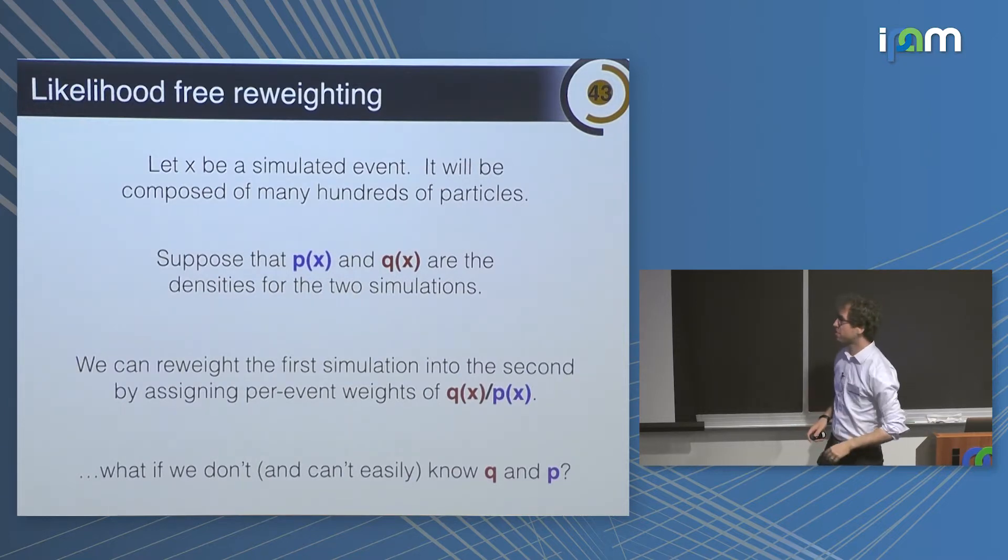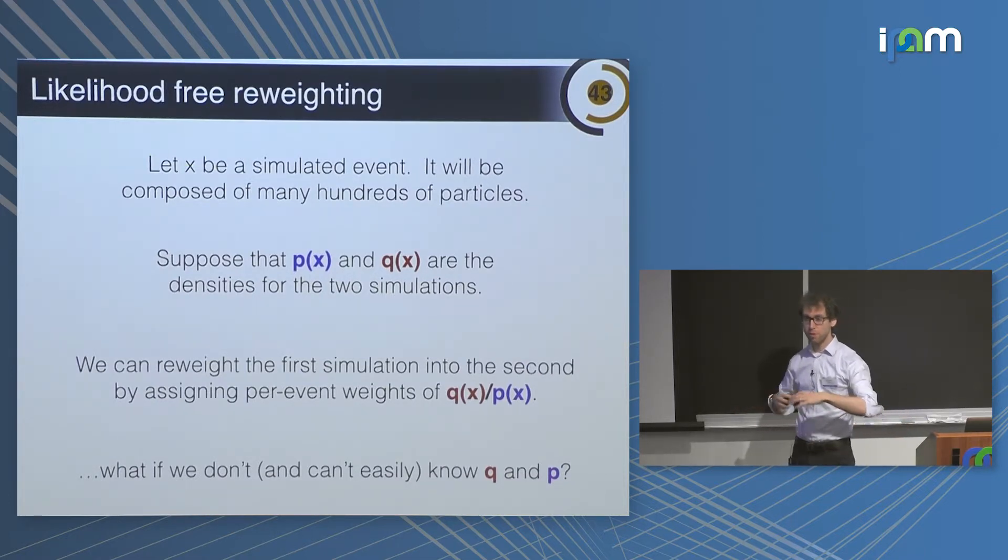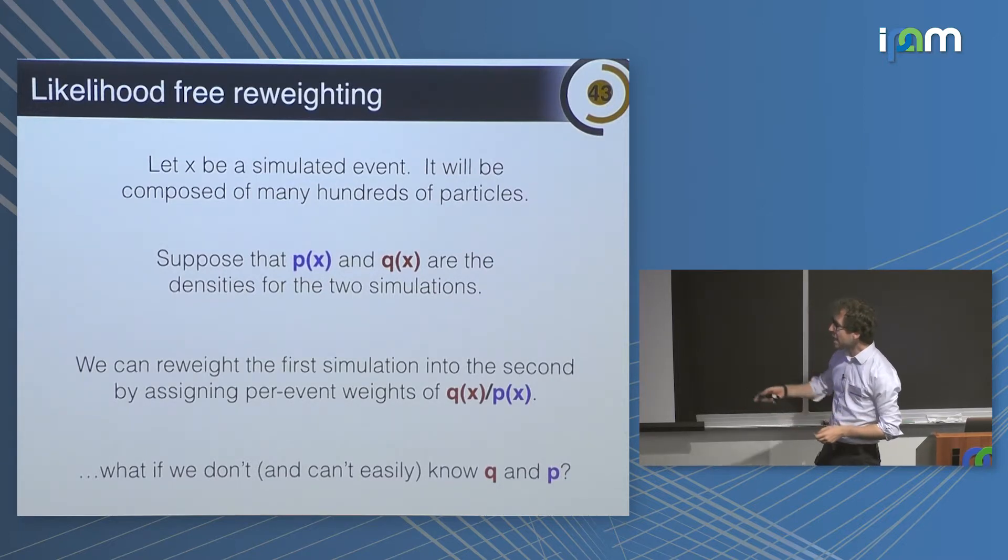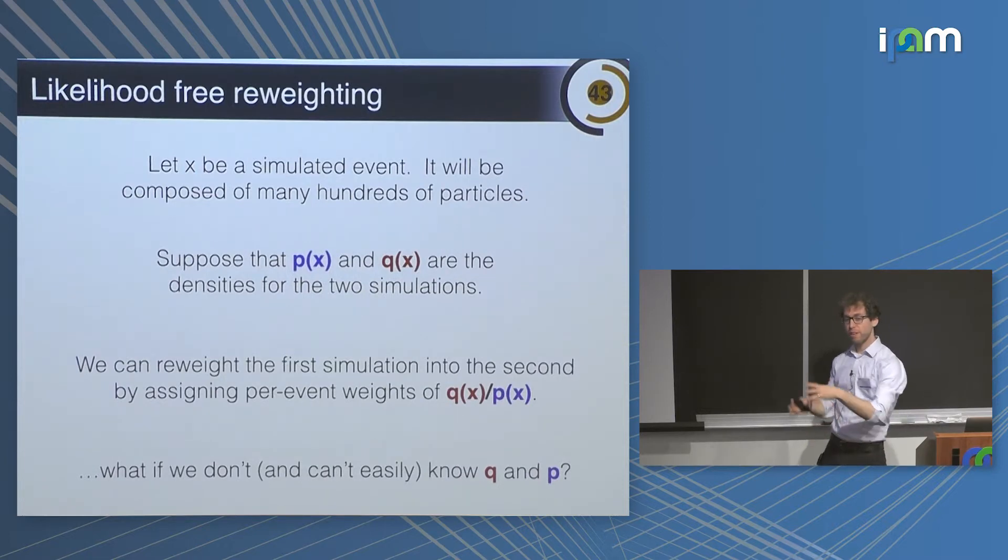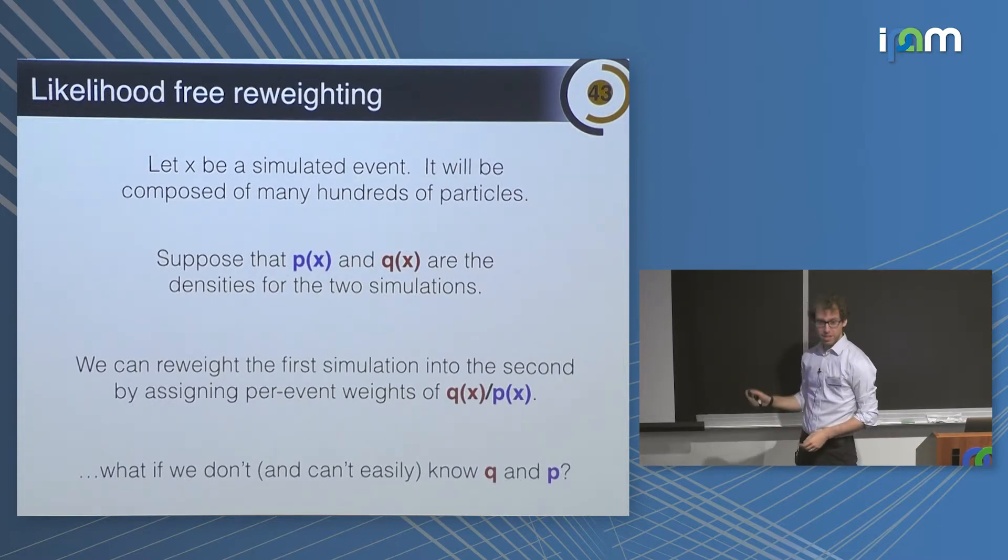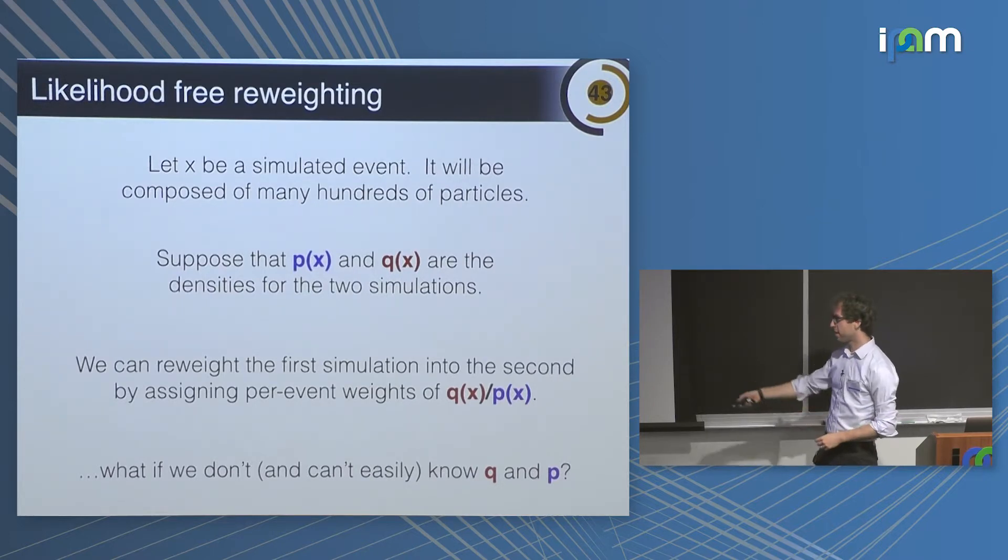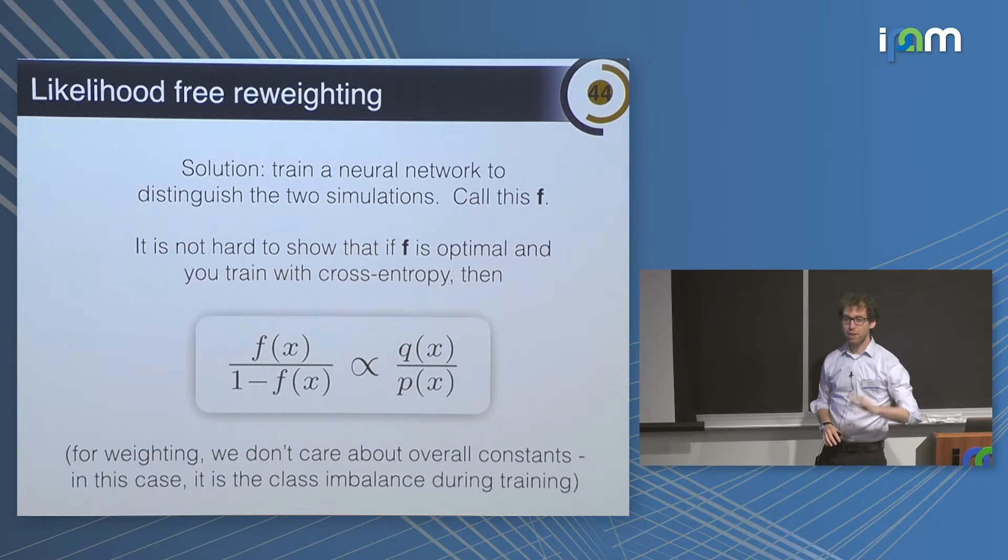The idea is extremely simple. Suppose I have some simulated events, let's call it X. X could be the properties of many hundreds of thousands of particles including all their momentum as well as the types of particles. If I have two simulations, let's say one is represented by P of X, the probability distribution function, and the other one is Q of X. If I want to reweight one simulation to another simulation to be statistically identical, I would just take every event X and give it a per event weight of Q of X over P of X. Now, what if I can't evaluate Q and P? I'm never going to write down P and Q separately. So I'm not able to take this ratio.